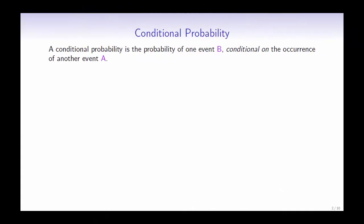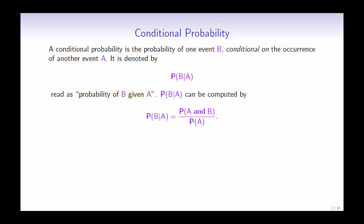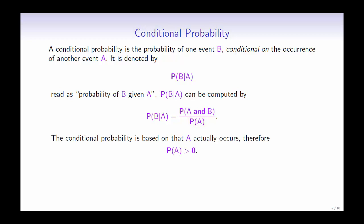A conditional probability is the probability of one event B conditional on the occurrence of another event A. It is denoted by P(B|A) and is read as the probability of B given A. It can be computed by the following formula: take the probability of A and B occurring divided by the probability of A. We can divide by the probability of A because the conditional probability is only used if A actually occurs — in other words, the probability of A is non-zero.